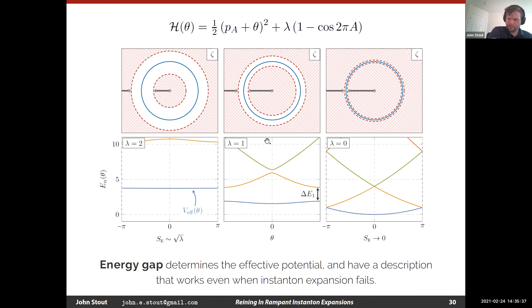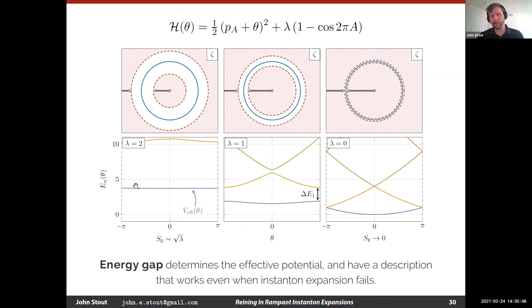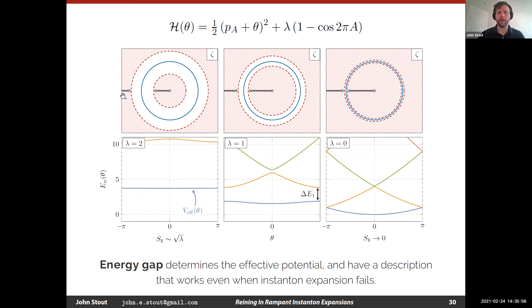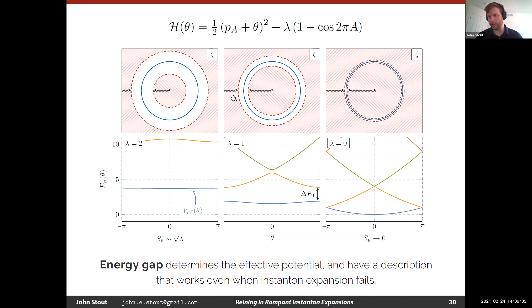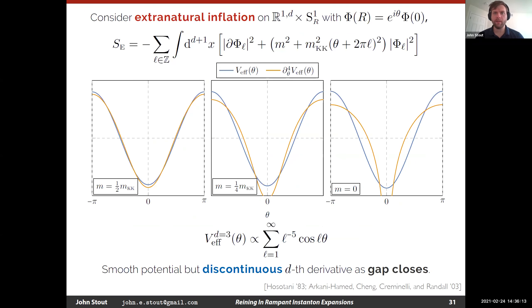I'm probably a little bit over time. The picture you should think of is that as I'm moving between a convergent instanton expansion and a poorly convergent one, I just have these non-analyticities coming in. As long as I can describe those non-analyticities, then I have a very concise way of describing the effective potential — I don't need to include billions of Fourier coefficients.